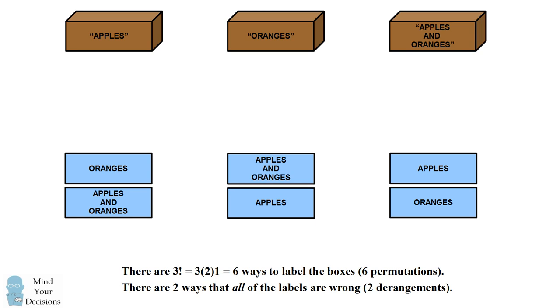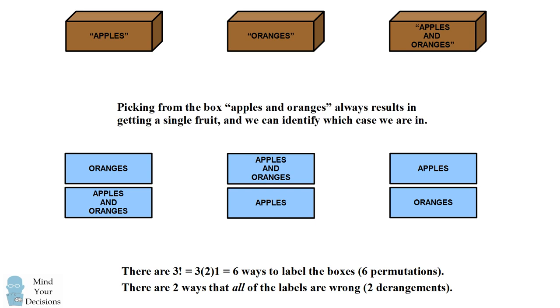What we do is we ask for a sample from the box that's labeled apples and oranges. We know that the box that's labeled apples and oranges has to contain only one fruit. Once we figure out what that fruit is, we can identify which of these two cases we're in, and we can label all of the boxes correctly.